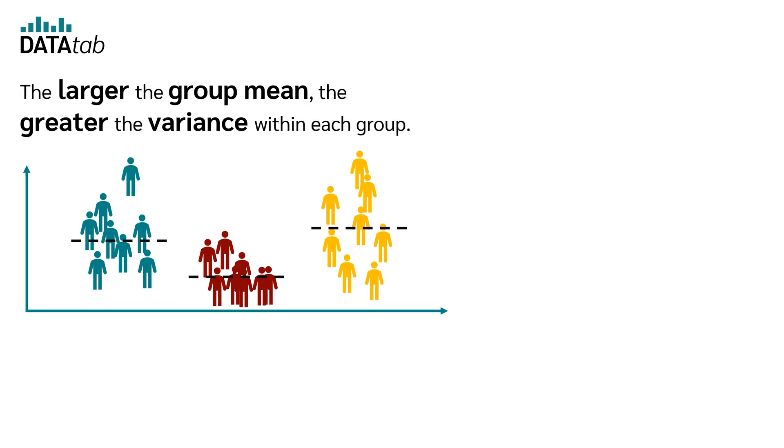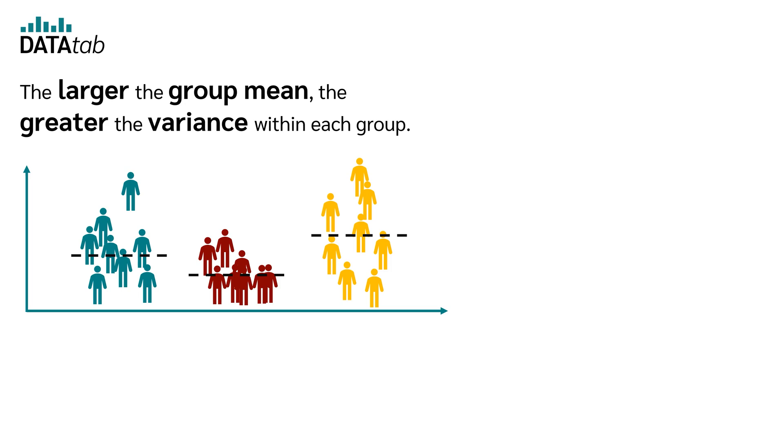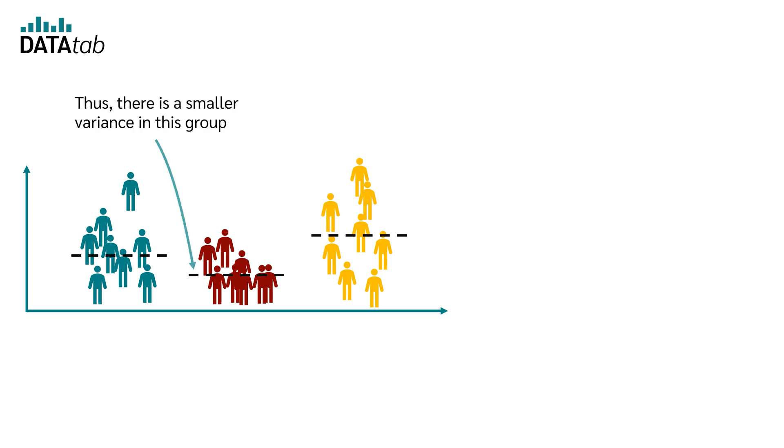The larger the group mean, the greater the variance within each group. Thus, there is a smaller variance in this group than in that group.